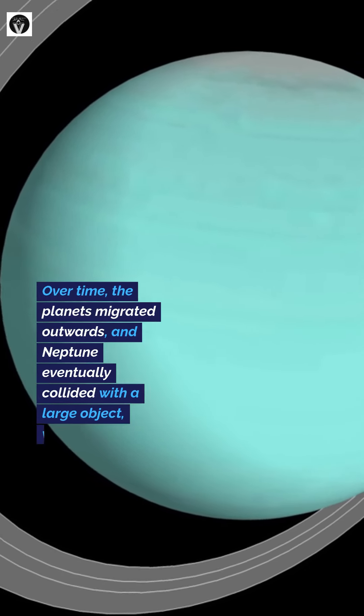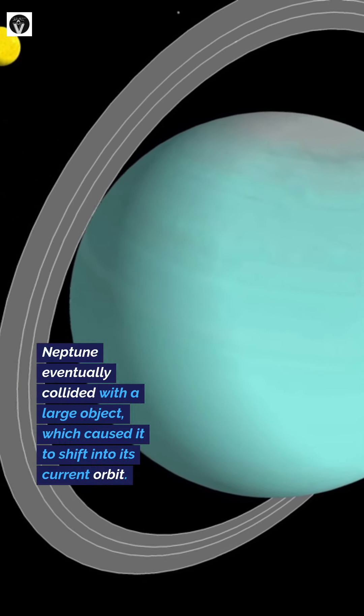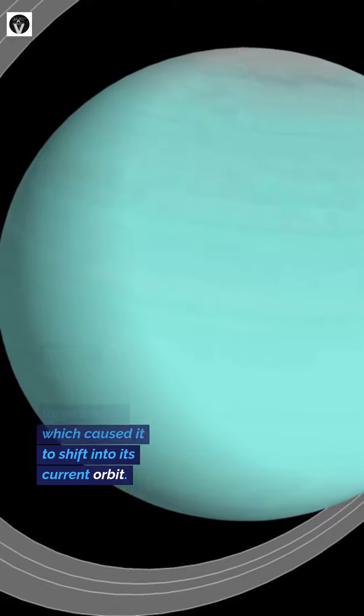Over time, the planets migrated outwards, and Neptune eventually collided with a large object, which caused it to shift into its current orbit.